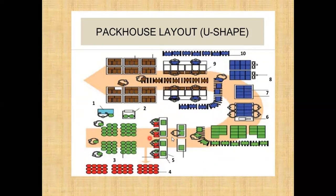The U-shape is not usually followed because if the receiving section and dispatch section are close together, there may be chances of cross-contamination. Most of the time the receiving section should be at one place and dispatch at another, so that cross-contamination chances are avoided.